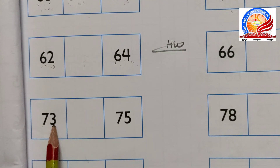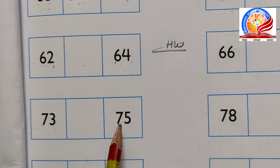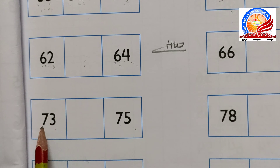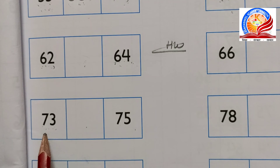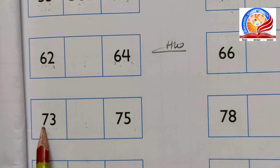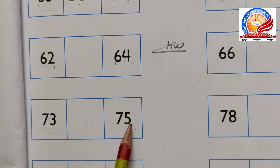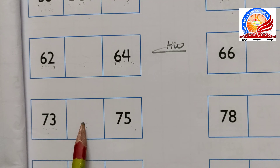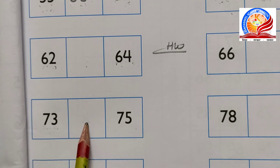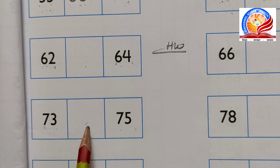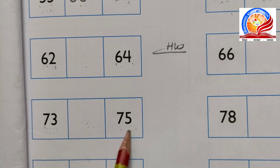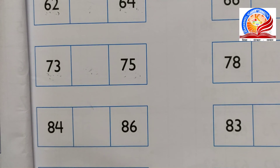Next yahan diya gaya hai 73 aur 75. 73 ke baad mein kaun sa number aayega? Boliey: 71, 72, 73, and 74. 73, 74, and 75. 74 is between 73 and 75. 74 - 73 aur 75 ka between number hai.